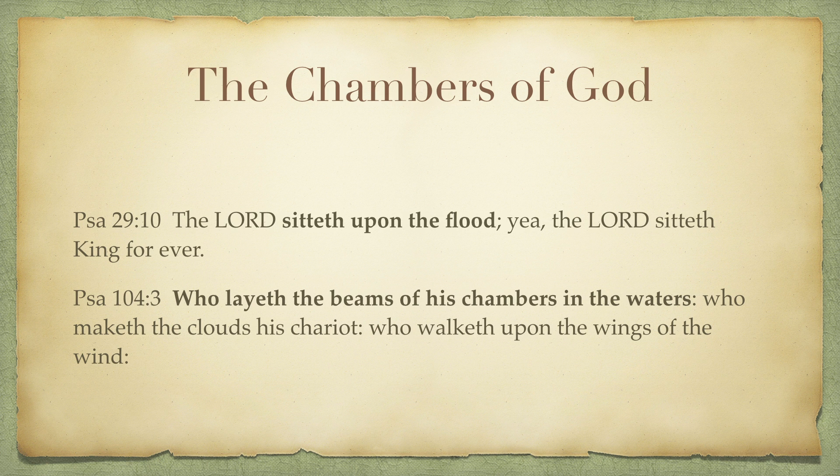Whatever the composition of the firmament is, I can't tell you for certain — I don't think anyone can. But one thing is certain: God made it, and it is solid, transparent, and very strong. He stretched it out, he spread it out — this is what the Bible says. It holds up the waters, it looks like crystal or glass, it's spread over the earth, and he placed the sun, moon, and stars inside that firmament. This firmament divided the waters, and those waters are still there, and God's throne is still above those waters.